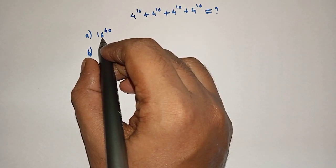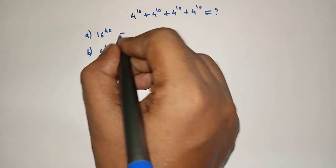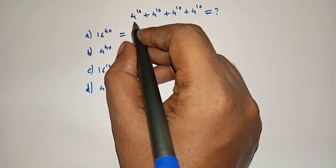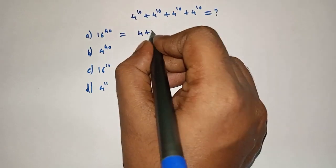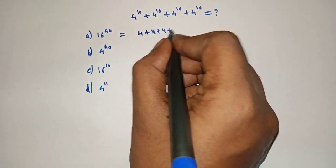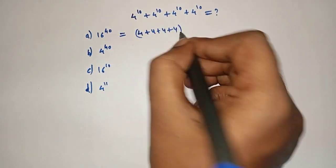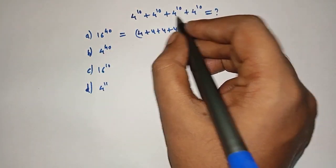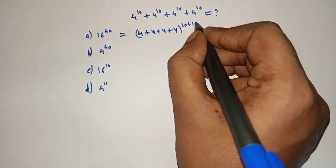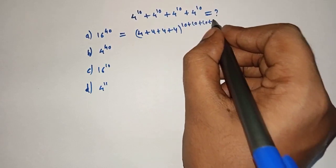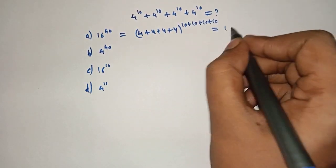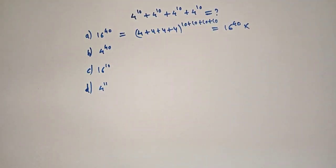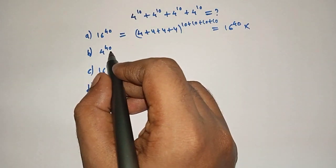First we will check 16 raised to 40. So 16 can be written as the sum of their bases: 4 plus 4 plus 4 plus 4, and 40 can be written as the sum of their powers: 10 plus 10 plus 10 plus 10, which gives 16 raised to 40. This is not the answer.